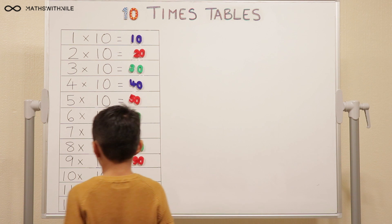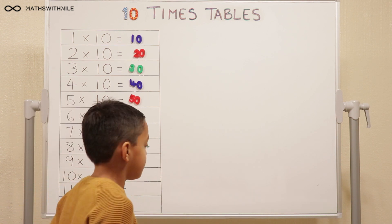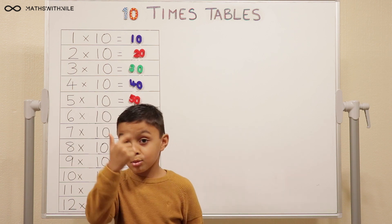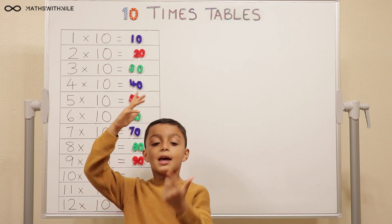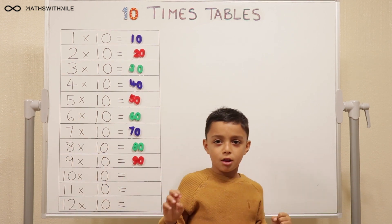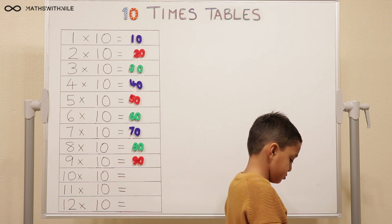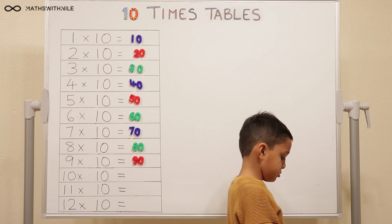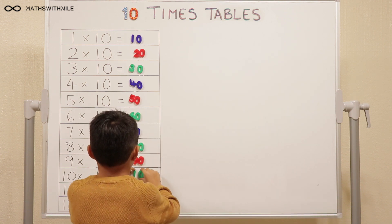10 times 10, 10 times 10 equals 10, 20, 30, 40, 50, 60, 70, 80, 90, 100. 100. So we've made it to 100, but still 2 more to go. Okay.